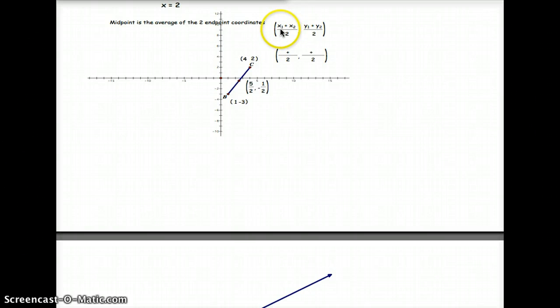You have your x values which would be 1 plus 4 is 5 over 2. So that's how we get 5 halves. Take your y values, negative 3 plus 2, negative 3 plus 2 is negative 1 over 2. That's how you get negative 1 half.